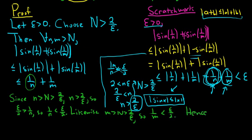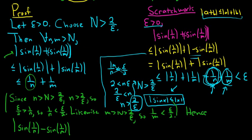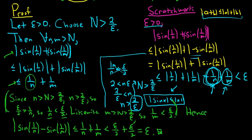Hence, going back to the difference, the absolute value of sine of 1 over n minus sine of 1 over m is less than or equal to 1 over n plus 1 over m, which is less than epsilon over 2 plus epsilon over 2, and that equals epsilon. That completes the proof. We have shown that this is a Cauchy sequence. I hope this video helps someone out there working on Cauchy sequences.